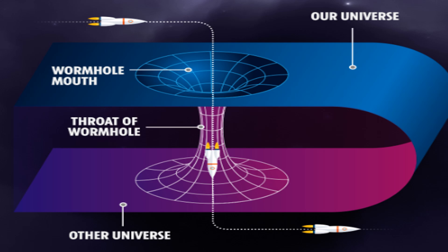Exotic matter is crucial because it would need to provide a repulsive gravitational effect to keep the wormhole's throat from closing. Without such matter, the wormhole would collapse almost instantaneously after forming, rendering it useless for travel. This requirement makes the creation and maintenance of a wormhole incredibly challenging, as the amount and type of exotic matter needed are beyond our current technological capabilities, at least to our knowledge.